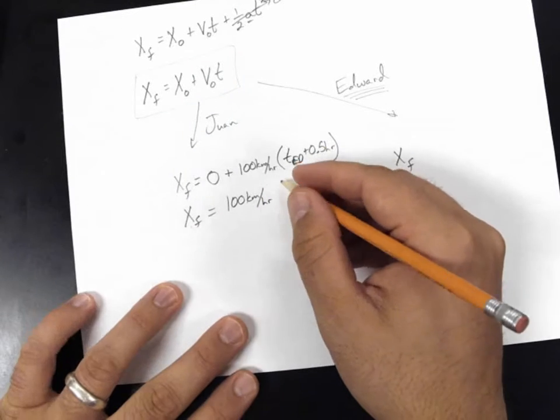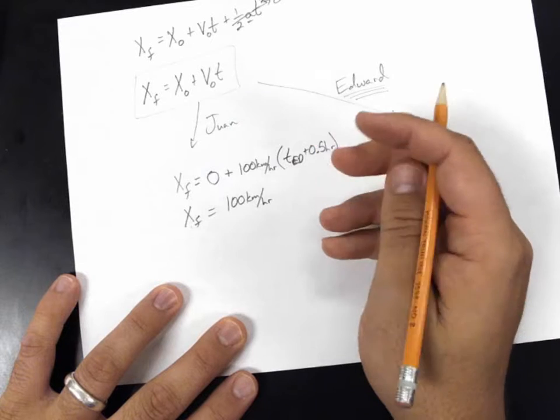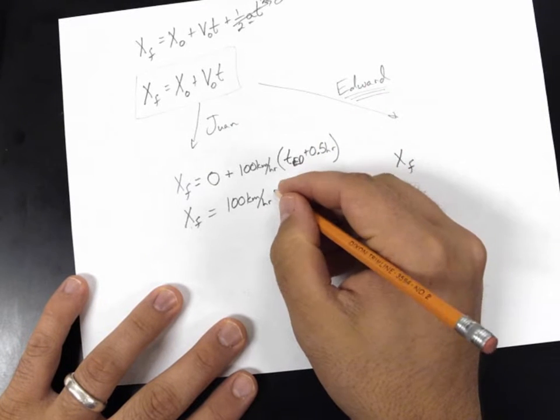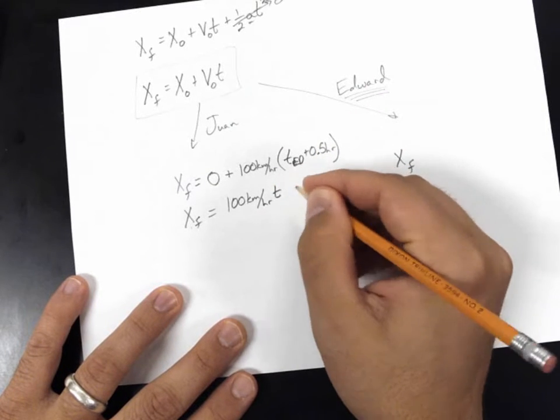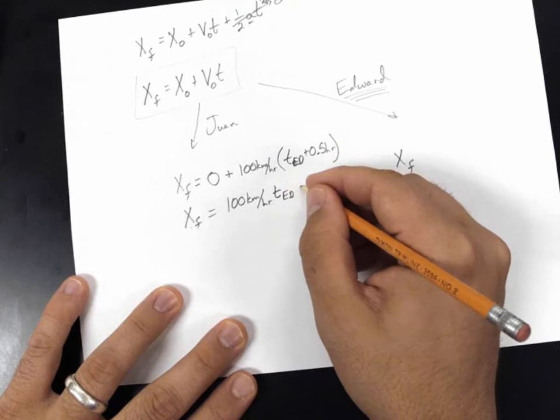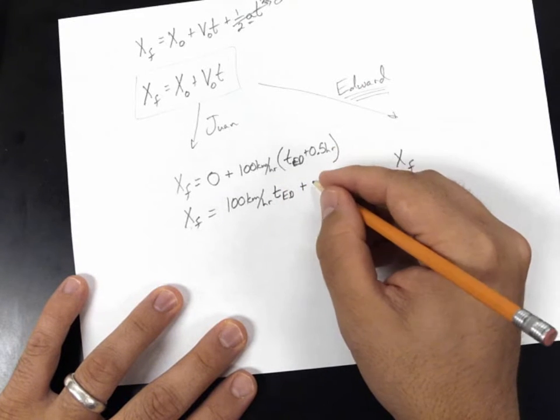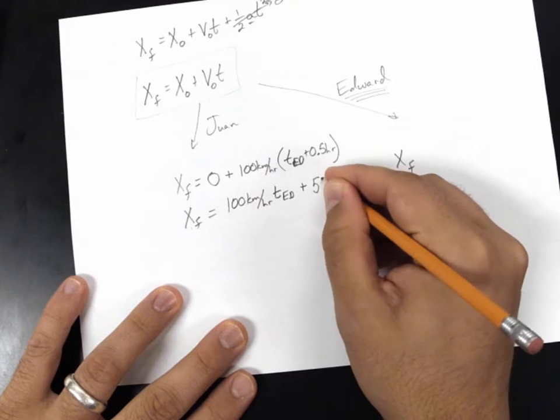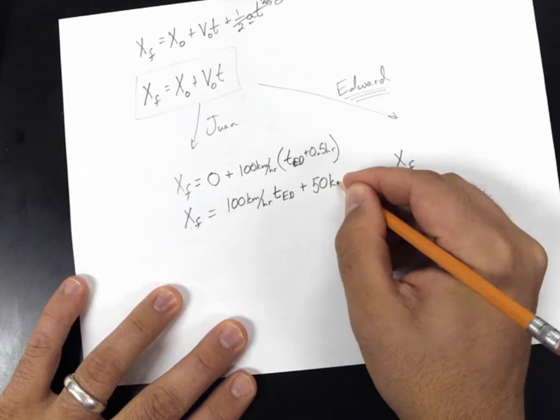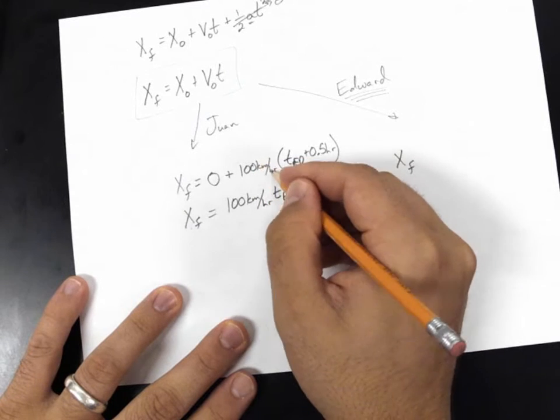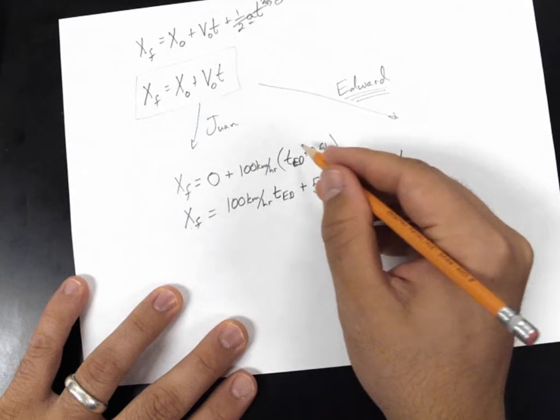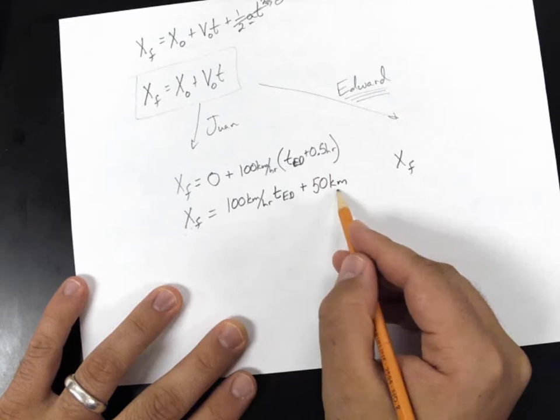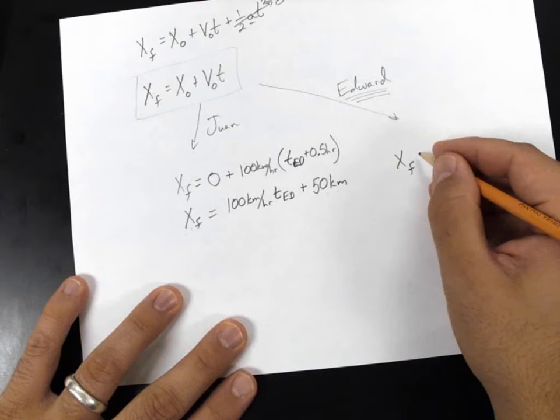So now let's create this equation for both individuals. This will be Juan on the left. And this will be Eddie on the right. This is like Twilight, right? Wasn't his name Edward? Probably. X final. We do not know this number for Juan. We know that it will be the same as Ed's, but we do not know that number. Equals X initial. What is X initial? It is zero for Juan. Plus V initial for Juan was 100, positive 100 kilometers per hour. And our time was kind of confusing, but not too terribly confusing. Ted plus one half of an hour.